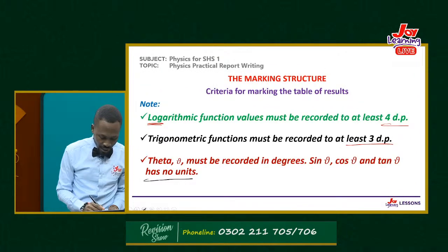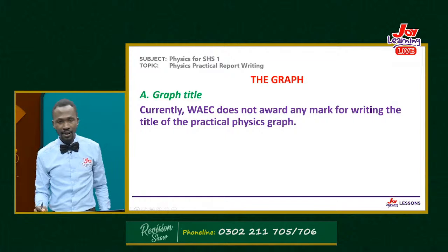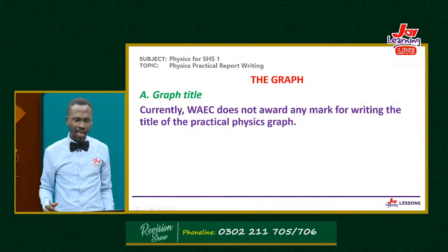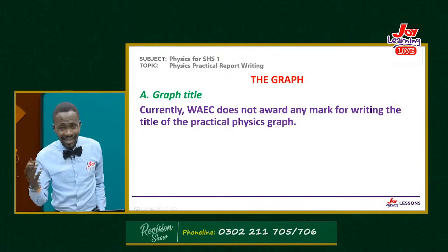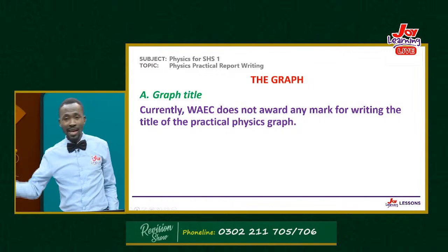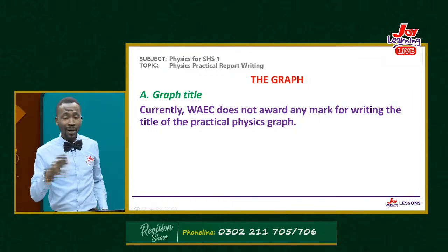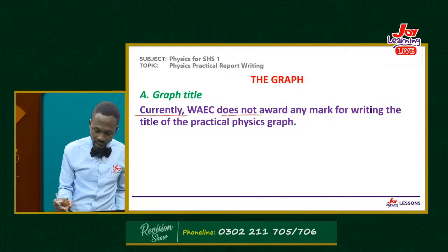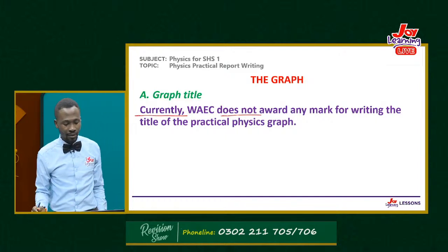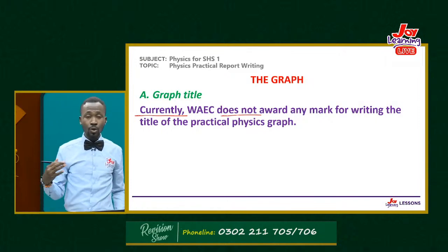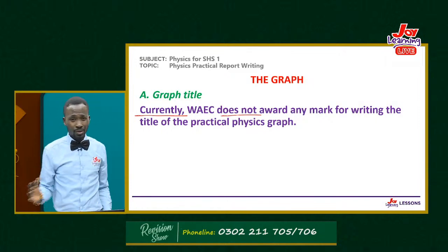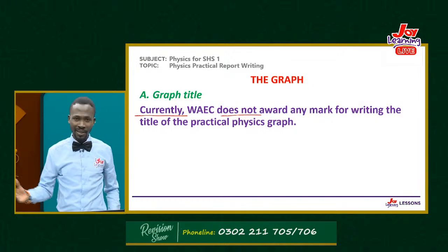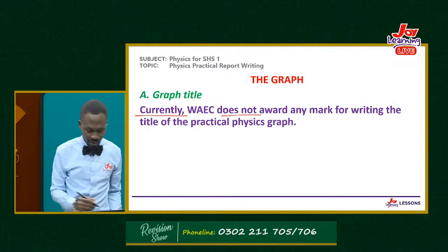In all the experiments, you are going to draw a graph. Very often, students write a title like 'a graph of T against L' — currently WAEC does not award any mark for writing the title of the physics graph. It is good to write it, but WAEC cannot give you a mark for it. Also, in physics graphs there is nothing like X axis and Y axis — we have vertical axis and horizontal axis.